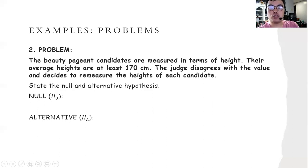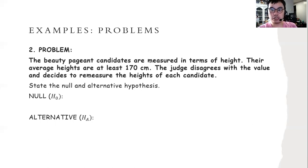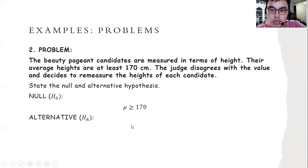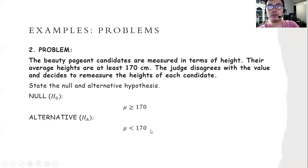In the second problem, beauty pageant candidates are measured in terms of height. The average height is at least 170 centimeters. The judge disagrees with the value and decides to remeasure the height of each candidate. The null hypothesis states that the mean is greater than or equal to 170, since 170 is the lowest based on the criteria but the mean can be equal to this value.